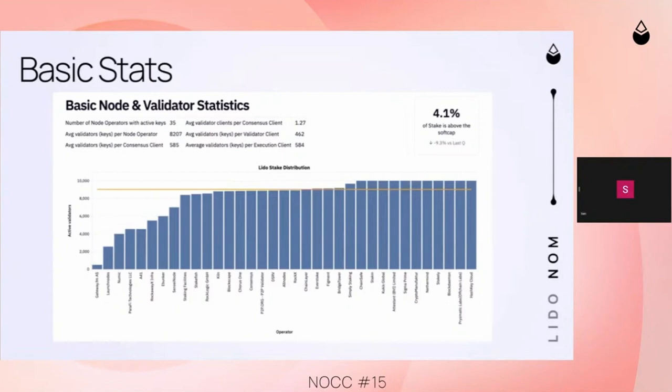People involved might know that we have historically onboarded 39 operators. Of those, we have one merger — so that's one down. We have Jump, who has chosen to off-board from the curated set. Develop has onboarded only recently and they weren't running keys at the end of Q4, though they are running them now. And we have ImpStones, who exited all their keys in November.